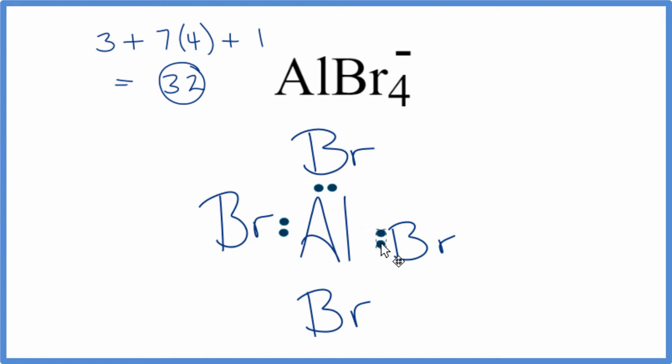Once we do that, we can go around the bromines on the outside and complete their octets. So right now, we're using a total of 8 valence electrons, and we'll complete the octets. Remember, we only have 32.